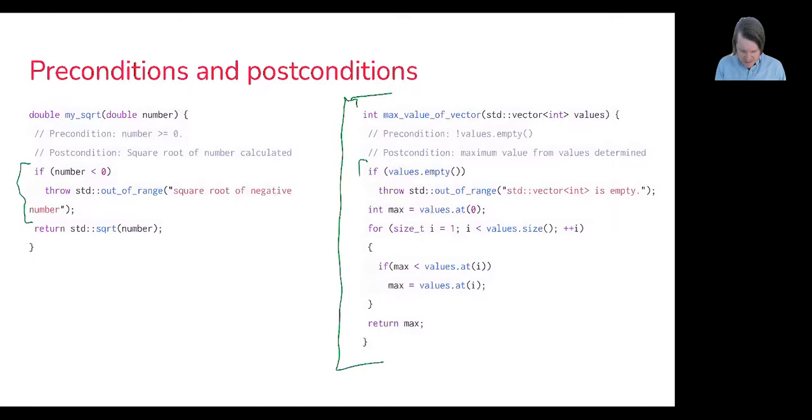let's see if our precondition is met. If it's not, we can simply throw an out_of_range exception that says the standard library vector is empty. So that's reporting this issue to the user and would allow them to handle it as they deem necessary.